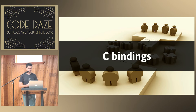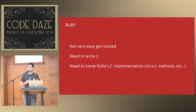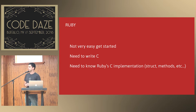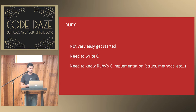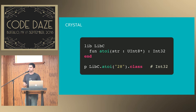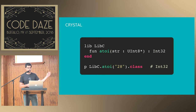Moving on to C bindings. My experience with Ruby — I actually never wrote a C binding in Ruby. Every time I look at it, it's pretty daunting. It's not very easy to get started — you most of the time need to write C, which I'm not comfortable with. In Crystal it's much easier. For instance, we have the hypot function that comes from LibC. You just declare LibC and then you have the header of the function and you can use it in your regular Crystal code. That's it.